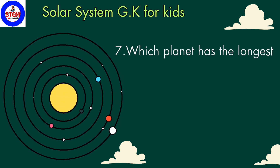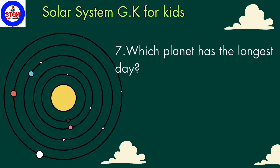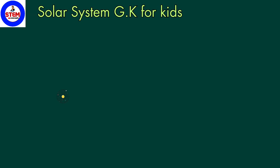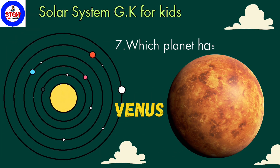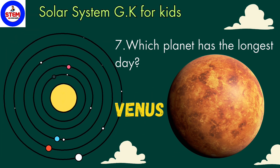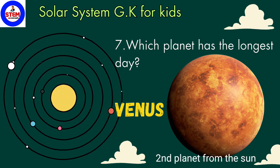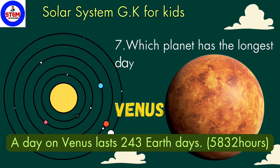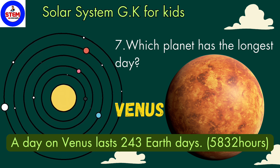Seventh question: which planet has the longest day? The answer is Venus. Venus has the longest day in the solar system. In order, Venus is the second planet from the sun. Do you know, children, a day on Venus lasts 243 Earth days, which equals 5,832 hours.